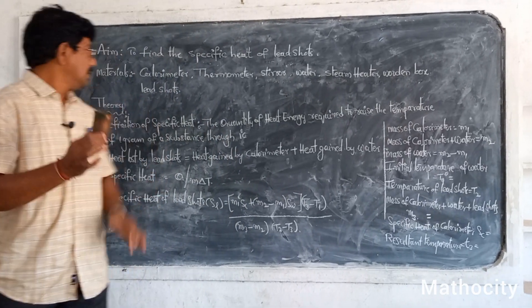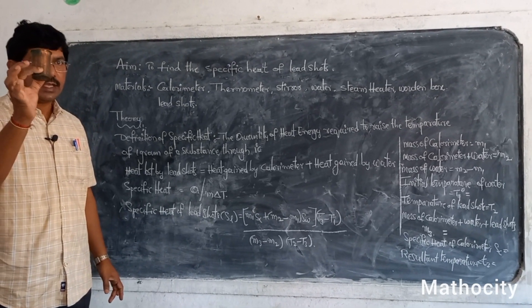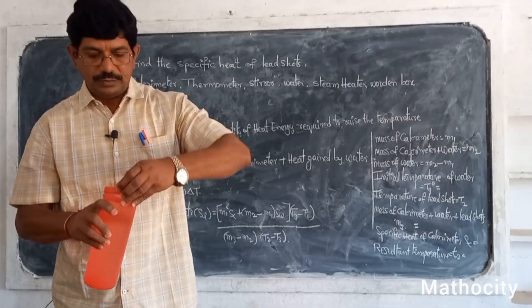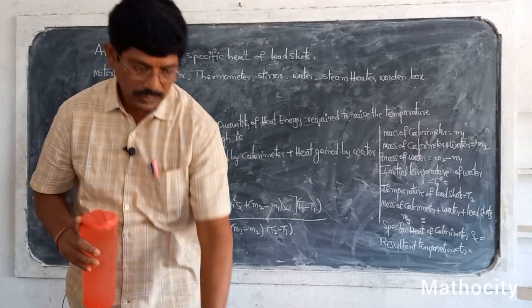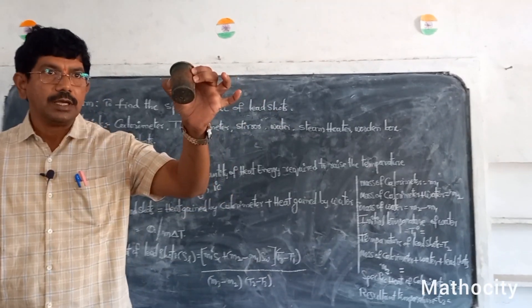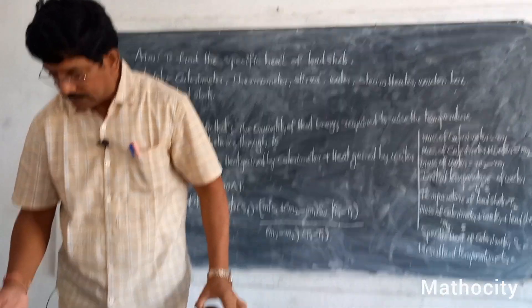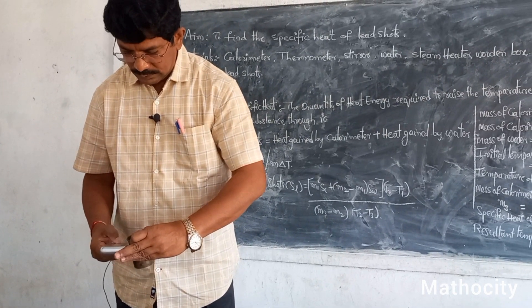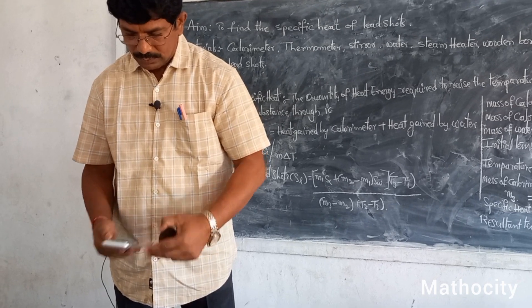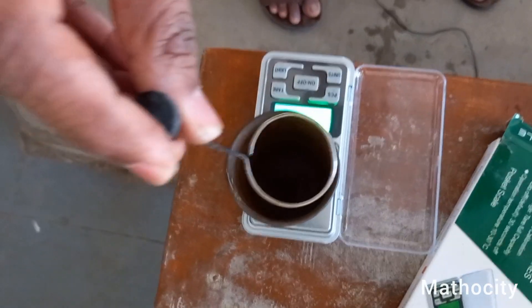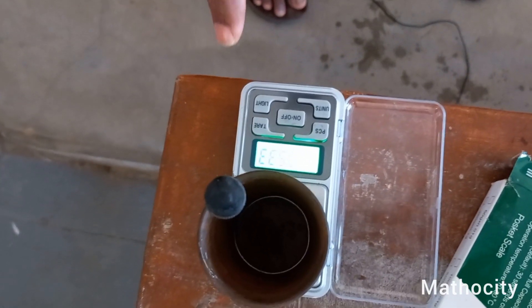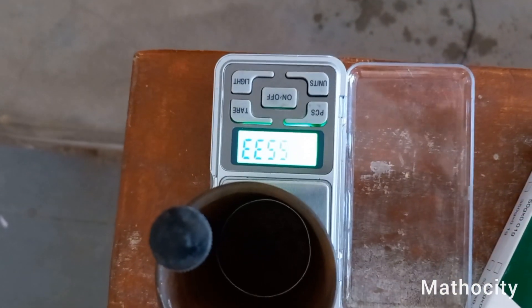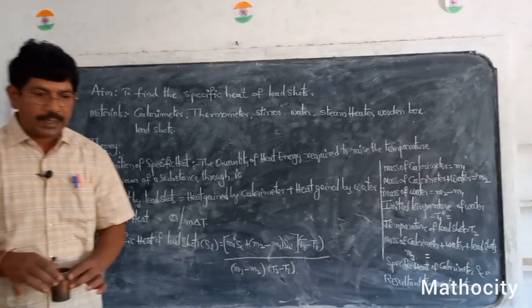Before starting the experiment, take the calorimeter and fill one-third of it with water. First, find the mass of the calorimeter along with the stirrer. I am finding the mass of the calorimeter with the stirrer. The mass of the calorimeter with the stirrer is 55.33 grams. Make a note of that in your notebooks.